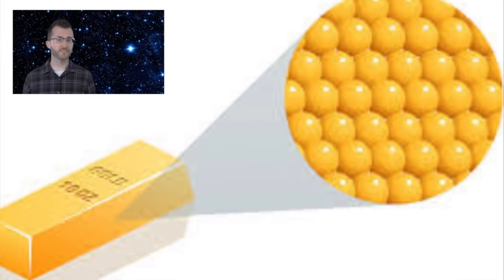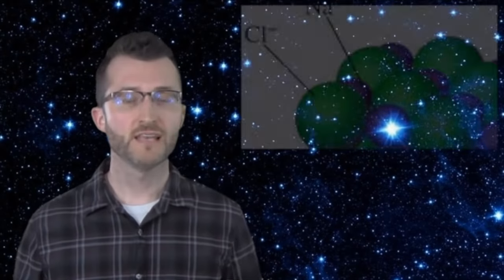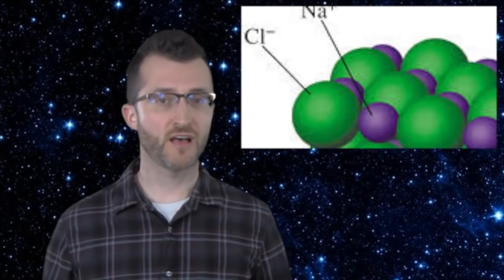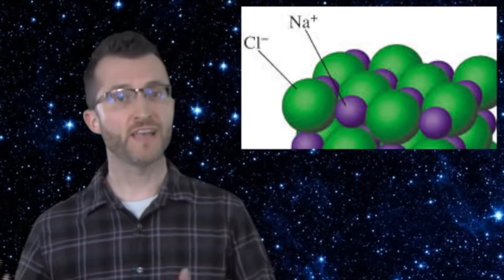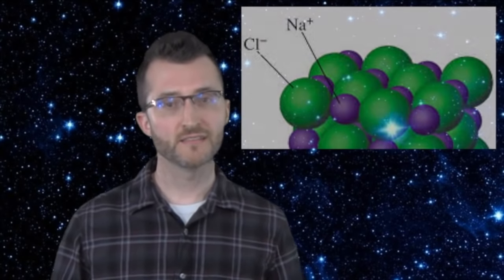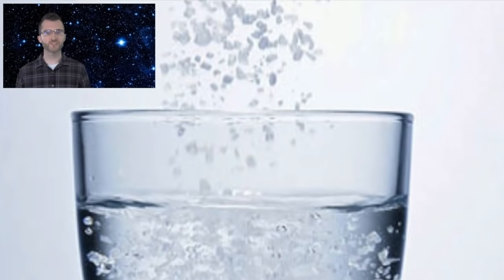For example, gold is a substance and an element because it's only made up of gold atoms. NaCl, table salt, is a substance and a compound because it's always made up of Na plus and Cl minus. Salt water, though, is a mixture because I can vary the proportions of salt and water in the mixture.